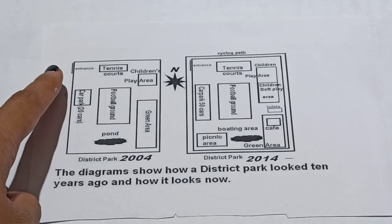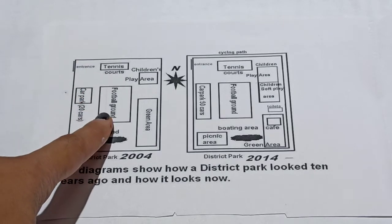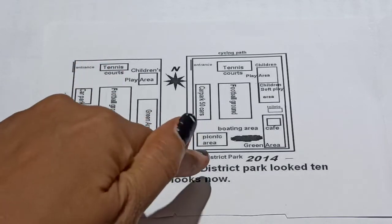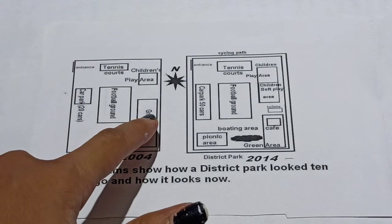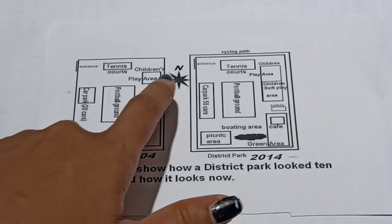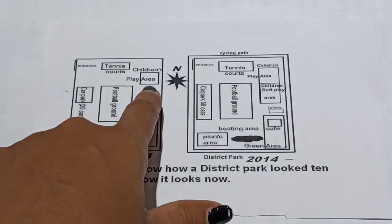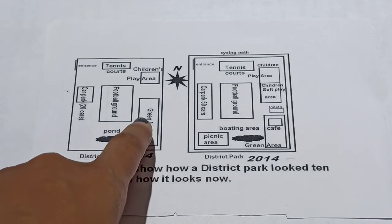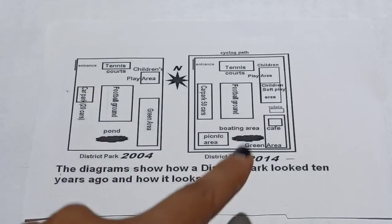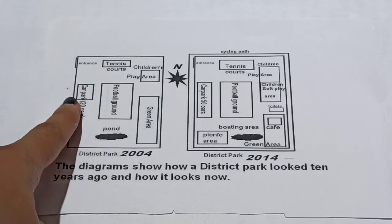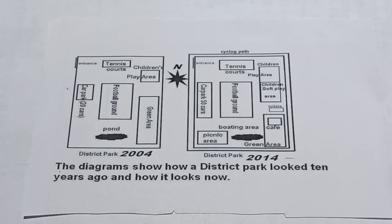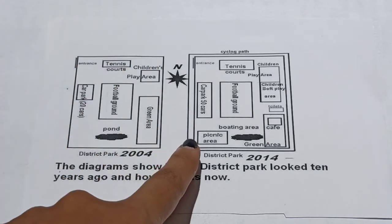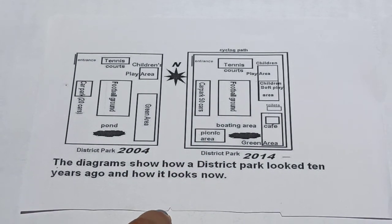We can see that the entrance remained unchanged, the football ground remained unchanged. The tennis court area has been expanded. The children's play area has also been expanded to the east southern side, and a children's soft play area has been constructed next to it. The garden area has been reduced, a cafe has been included in this garden area after a decade, and the car park has also been expanded.